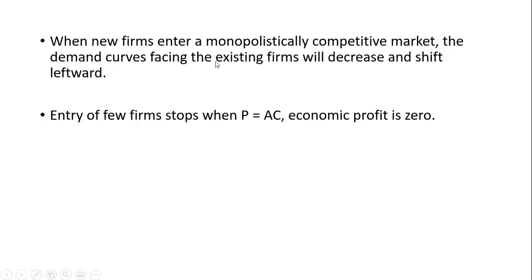When new firms enter a monopolistically competitive market, the demand curves facing the existing firms will decrease and shift leftward. This entry of new firms stops when price equals average cost and firms are just earning a normal profit, or where economic profit is zero.